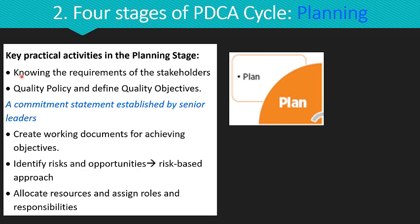The key practical activities in the planning phase are: first, know the requirements of your stakeholders; second, develop the quality policy and define quality objectives based on stakeholder needs; third, create documented procedures, processes and manuals to achieve the desired quality objectives; fourth, identify risks and opportunities using a risk-based thinking approach by proactively addressing potential risks while leveraging opportunities; and finally, allocate resources and assign roles and responsibilities to employees and leaders.